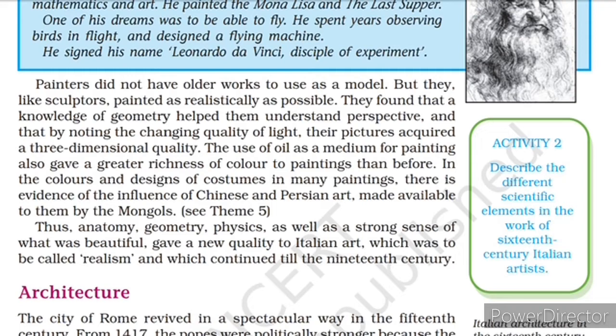Artists used oil in painting, which gave greater richness of color to paintings than before. There is evidence of the influence of Chinese and Persian art in the colors and design of costumes in many paintings, made available by the Mongols. In this way, a new quality of Italian art emerged from subjects like anatomy, geometry, physics, and a strong sense of beauty. This new quality was named 'realism,' and the tradition of realism continued till the 19th century.